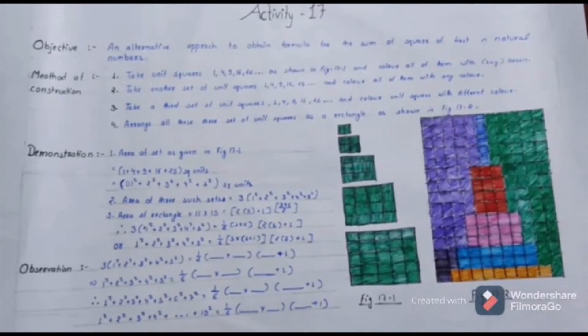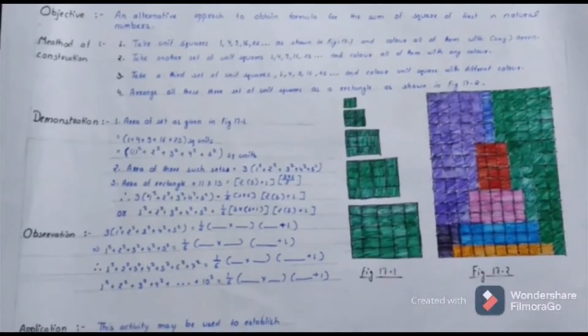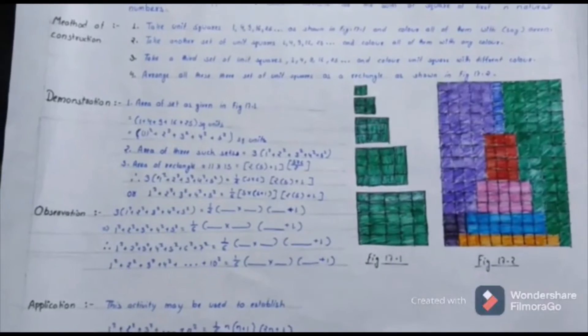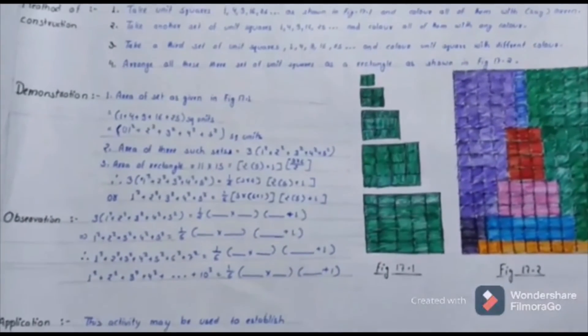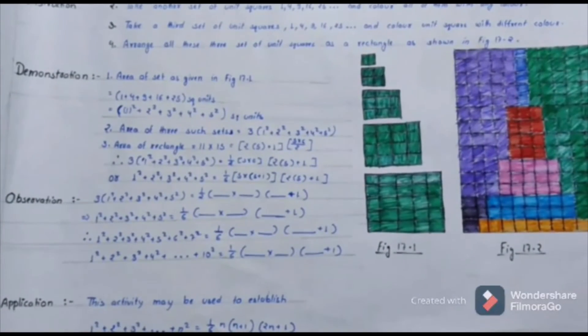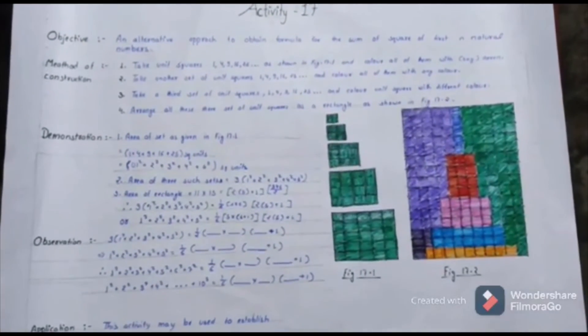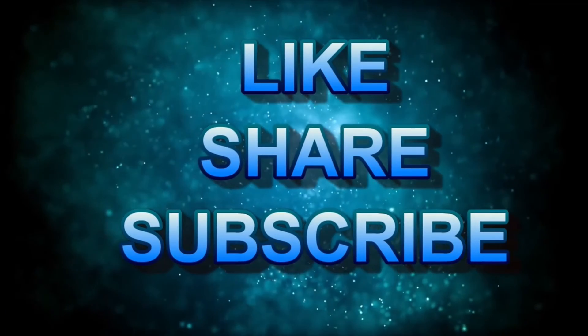For example, if we have to find the sum of squares of first 5 natural numbers, we can get it as 1/6 × 5 × (5 + 1). Thank you.